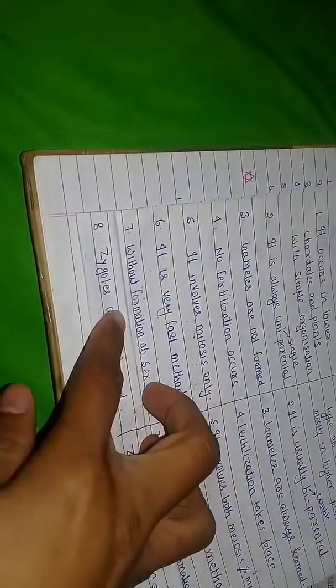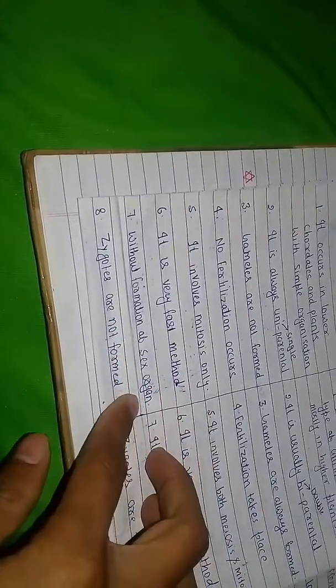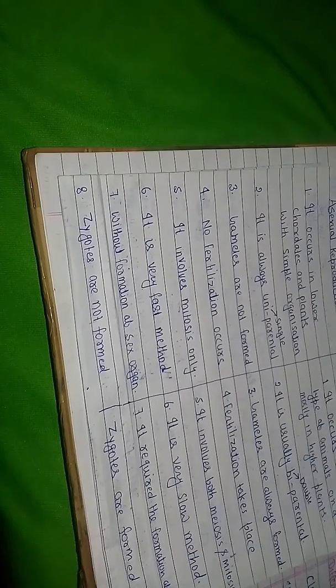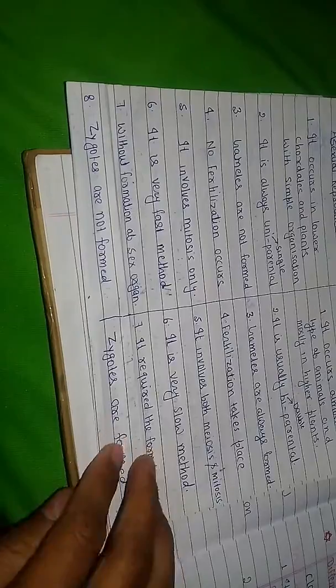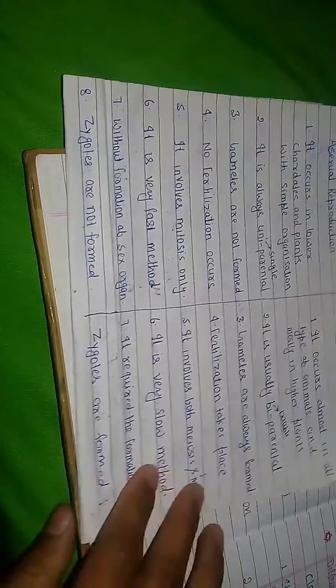And seventh point is: without formation of sex organ in asexual reproduction, they don't have formation of sex organ. But in sexual reproduction, it requires the formation of sex organ.